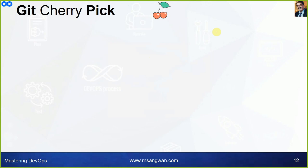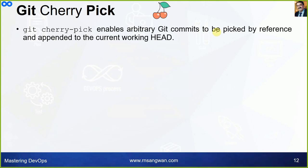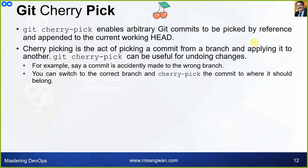Cherry pick. Cherry pick is a much more advanced concept — it's like picking what you want. You have multiple commits and you want to pick which ones will make your history clean and your code meaningful. Git cherry-pick enables arbitrary Git commits to be picked by reference and appended to the current working HEAD. Cherry picking is the act of picking a commit from a branch and applying it to another. Git cherry-pick can be useful for undoing changes — for example, if a commit is accidentally made to the wrong branch, you can switch to the correct branch and cherry-pick the commit where it should belong.